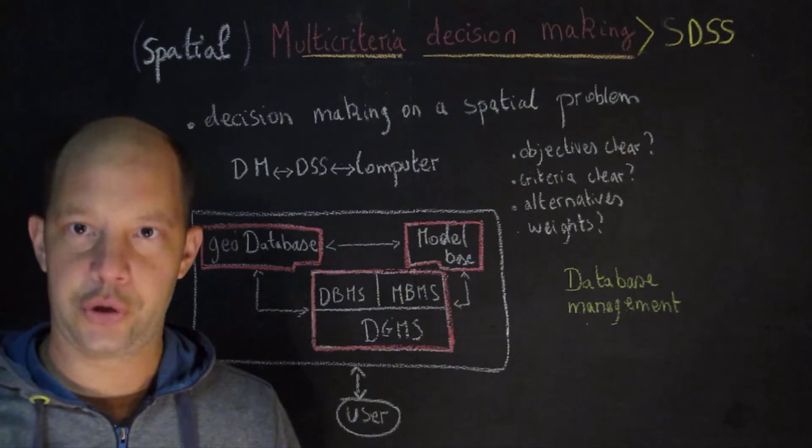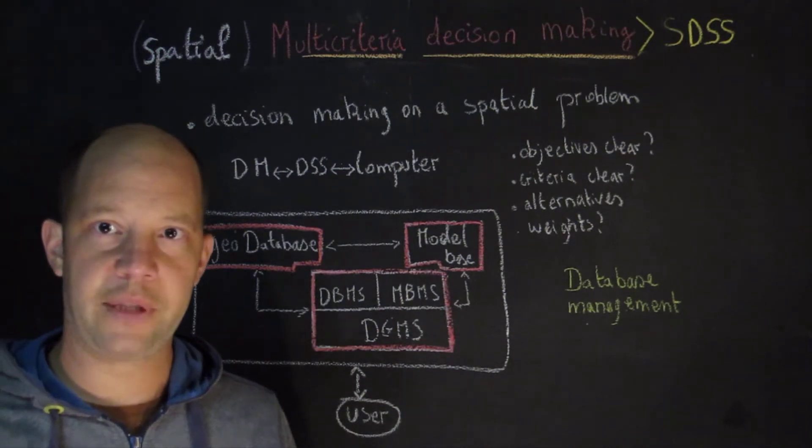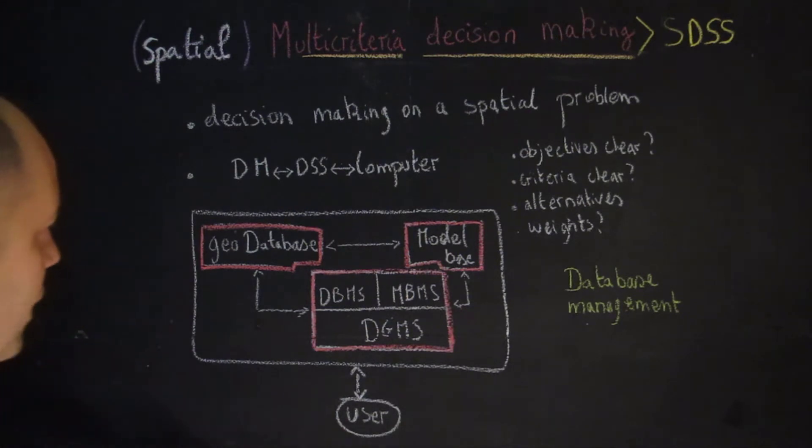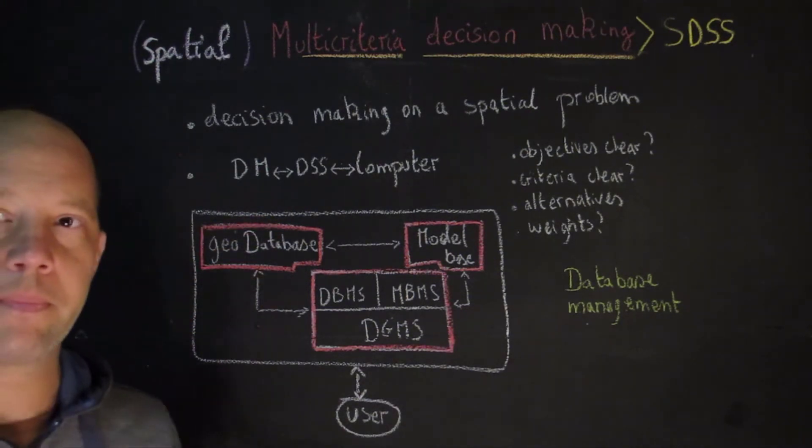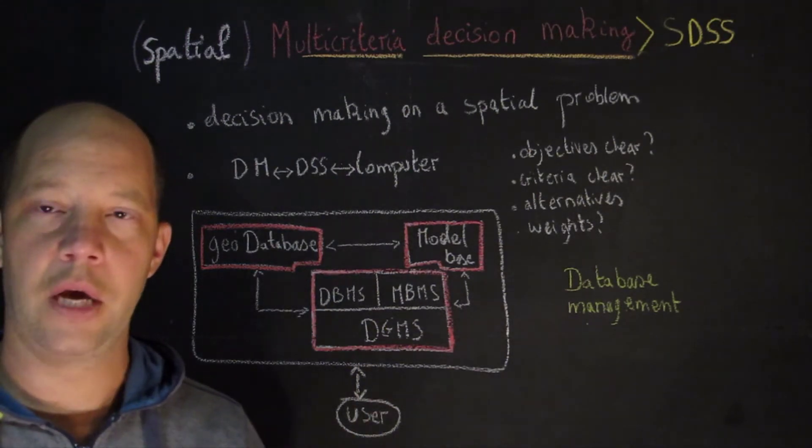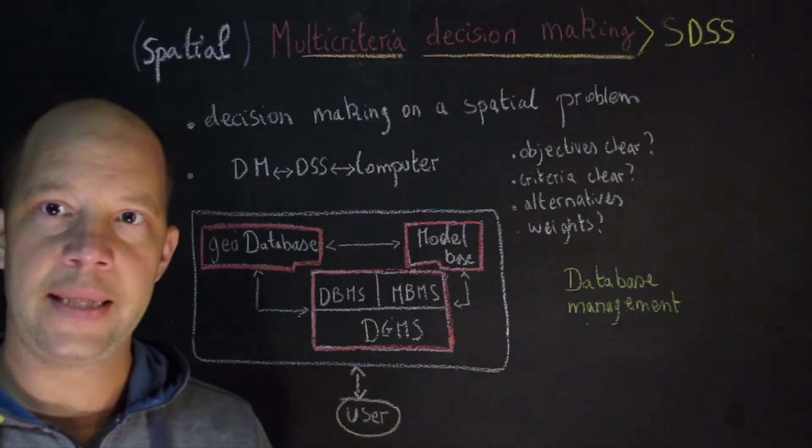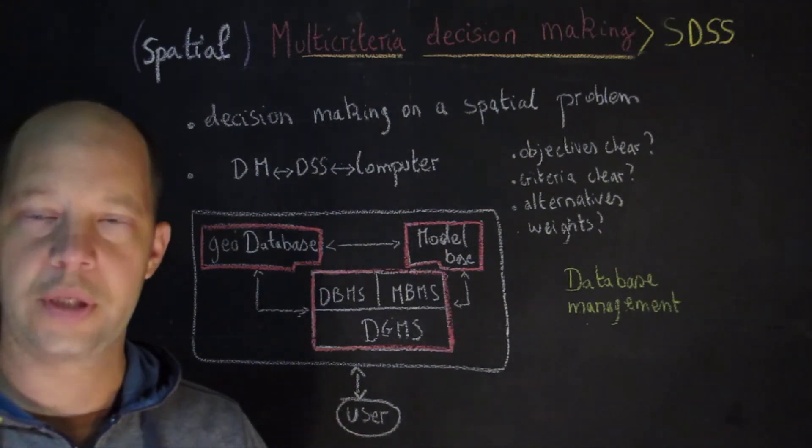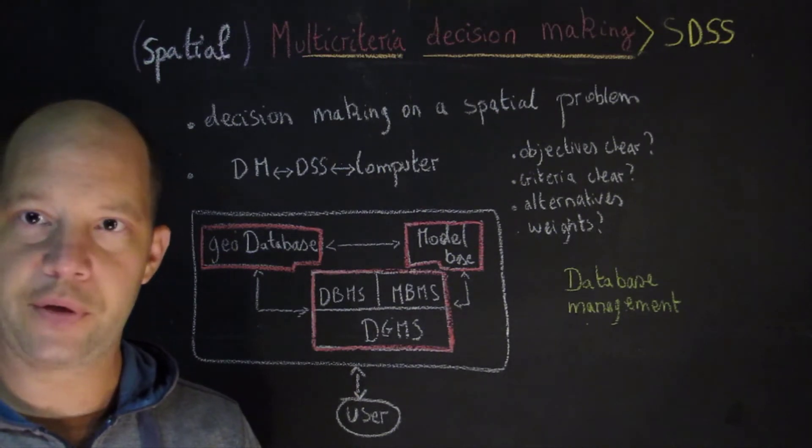A spatial decision support system has a different type of architecture. Let's have a look here. First, in this system, we have what is called a geodatabase. Now many of you know what a geodatabase is, but for those who don't, it's essentially a database that can maintain or host spatial data.